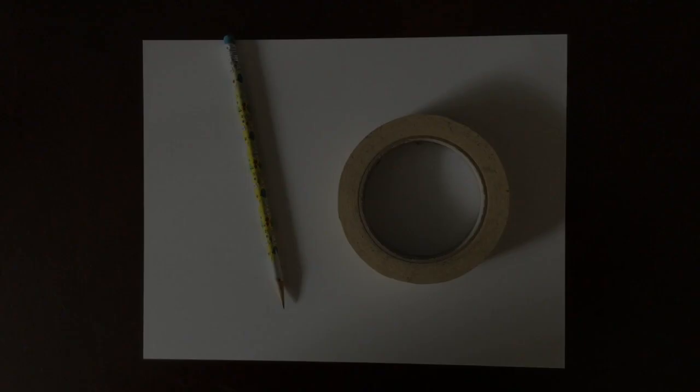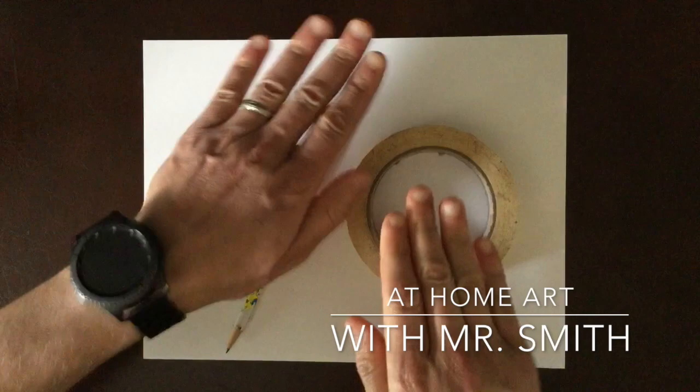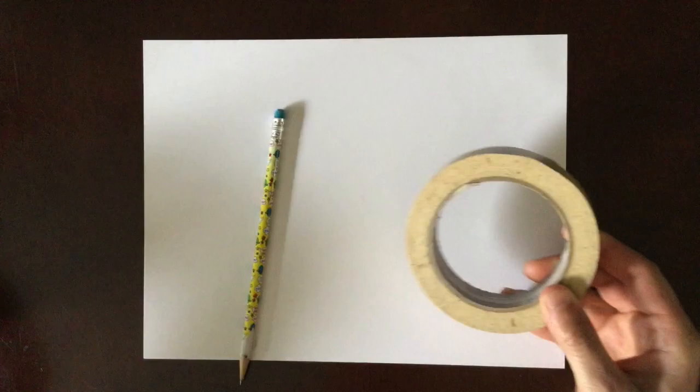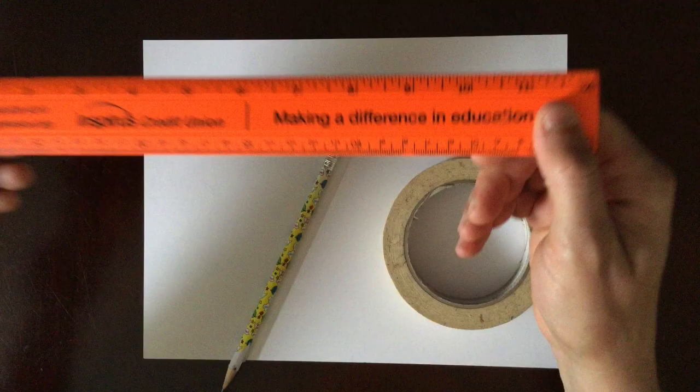All right, kiddos, welcome to another rendition of At Home Art with Mr. Smith. I've got all the materials I'm going to need. Oh, missing one thing. Boom, a straight edge. You call it a ruler, I call it a straight edge because that's really what I'm going to be using it for.